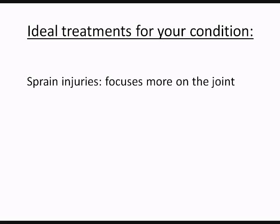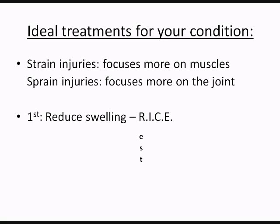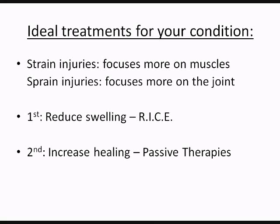Let's talk about some ideal treatments for your condition. For sprain injuries, you're going to focus more on the joint and fixing the joint. Joints typically don't have as much blood supply as muscles, so there are going to be specific therapies included. A strain is going to focus more on fixing the muscles. Our first goal is to reduce swelling using RICE — Rest, Ice, Compression, and Elevation. You're going to use an ACE wrap bandage to apply ice for about 15 to 20 minutes, rest it, compress it using that ACE bandage, and then elevate it.